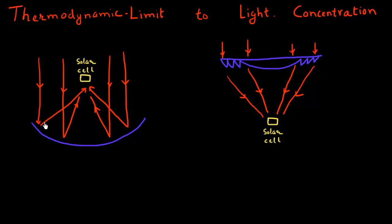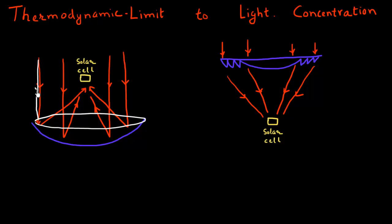Systems and apparatus for concentrating sunlight are often used in the field of photovoltaics. For example, shown here is this parabolic disk. It collects the sunlight coming from the sun and then concentrates it into this narrow beam, which is made incident on the solar cells.